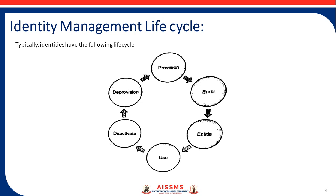The third step is entitle. After the identity is enrolled in the system, it is assigned roles and permissions within the system. The entitlement is based on the job to be performed by that identity, and you should be careful in this step to ensure that the identity is not over-permissive and is only allowed the access that is actually required for the job to be done.